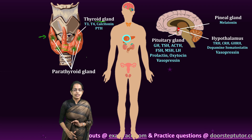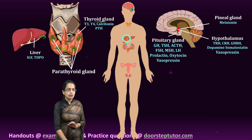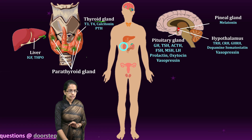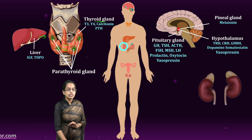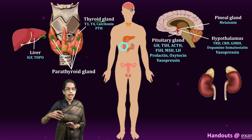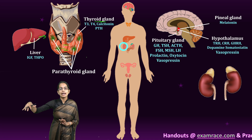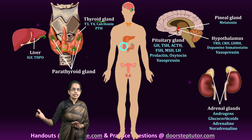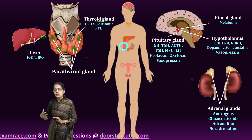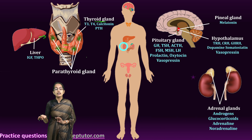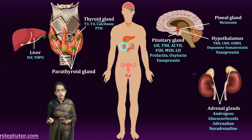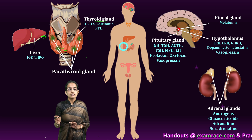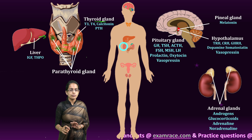The next important gland is in the stomach region. From the liver, we have IGF as the major secretion. Then we have the adrenal glands, which are two small cap-like structures on either kidney. These have the adrenal cortex and medulla. The important secretions are glucocorticoids, mineralocorticoids, androgens, and adrenaline or noradrenaline.